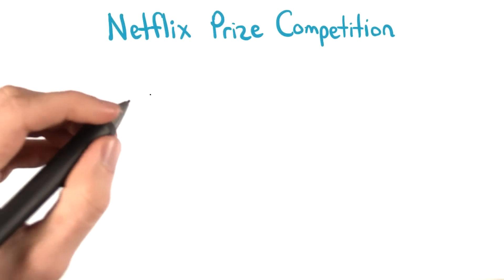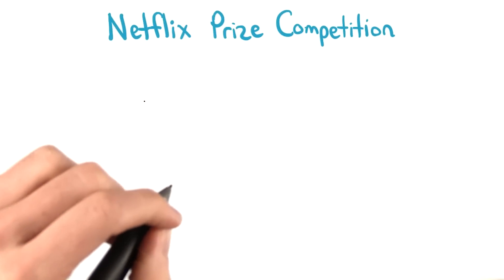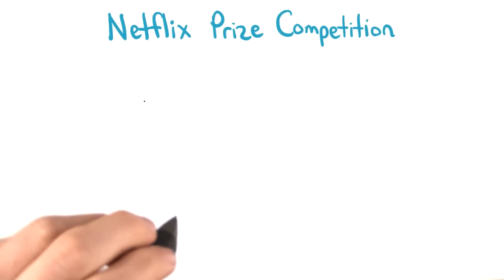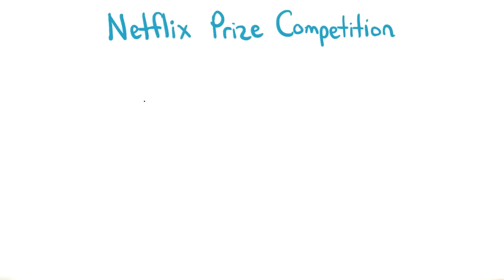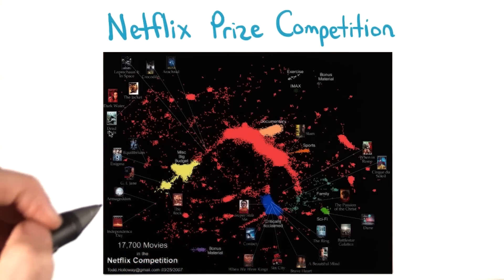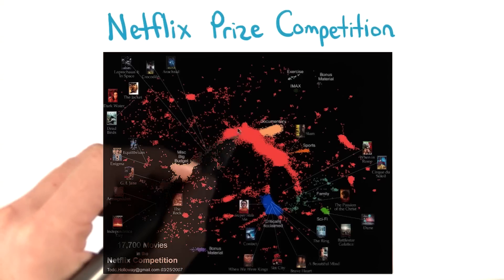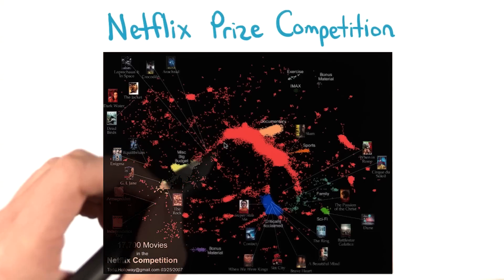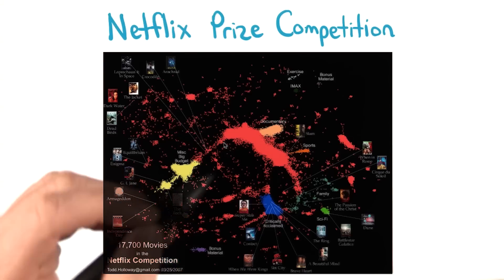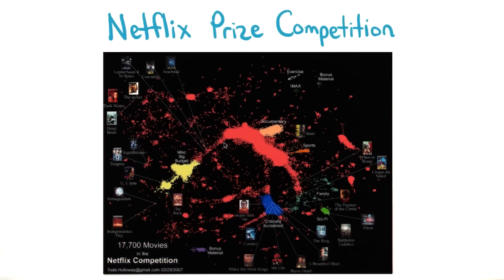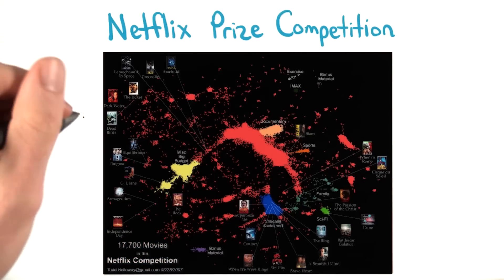A great example of EDA comes from the Netflix prize competition. Teams competed for a million dollar prize to improve the Netflix movie recommendation system by at least 10%. You can read more about the contest and the results by clicking on the link in the instructor notes. This visualization was created by Todd Holloway to show clusters of movies based on user ratings. Movies that are closer together received similar user ratings, whether those ratings were high or low. And it's exactly this type of visualization that allows us to get a feel for the data and determine what could be explored in more depth.